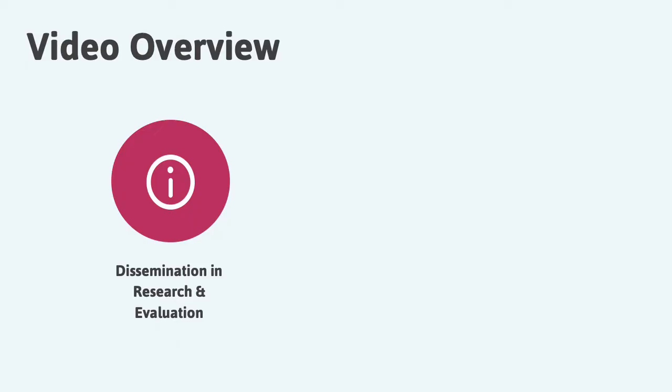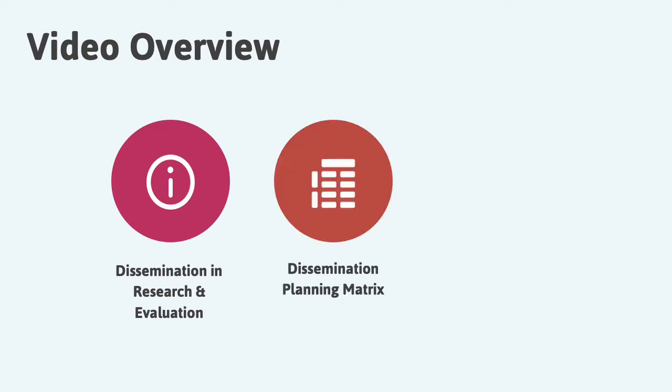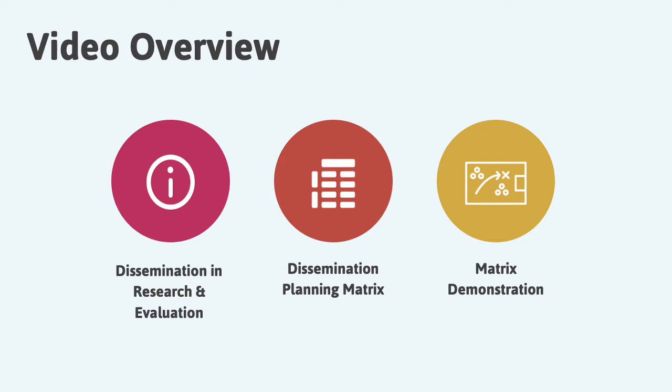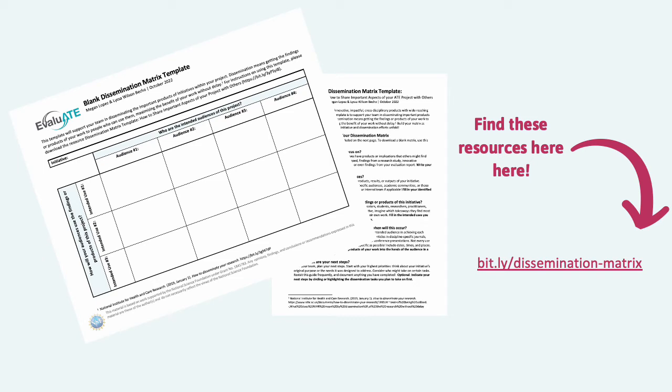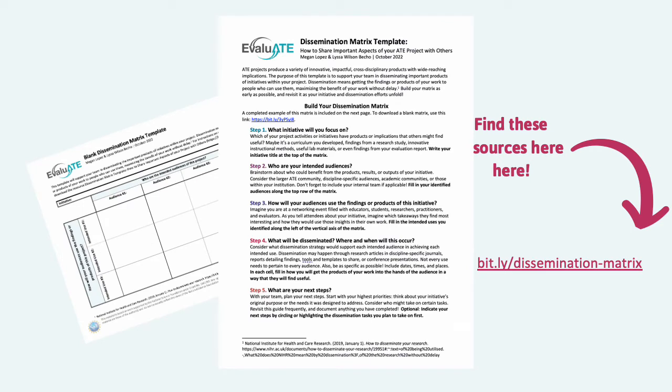In this video we're going to first discuss why we're talking about dissemination. Whether you're a researcher, an evaluator, or project staff, we encourage you to think about how you can clearly disseminate the important work that you're working on. We'll next share a dissemination planning matrix that we developed, designed to help you think about how you might disseminate your own initiatives. Finally, we'll go through this matrix and fill it out step by step so that you can fill it out using your own project examples. In this video we will be using this fillable dissemination matrix. If you haven't already, please take a moment to visit the link on the screen to download a matrix of your own. We also have a step-by-step instruction sheet at the same link with an example of a matrix already filled out for your reference.